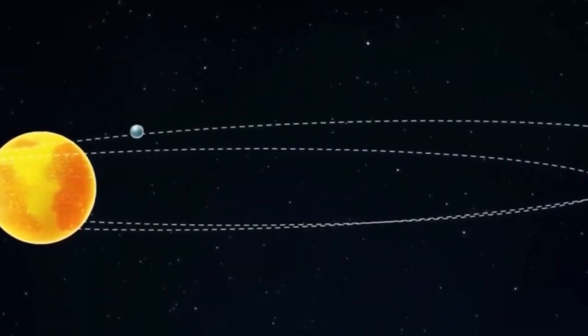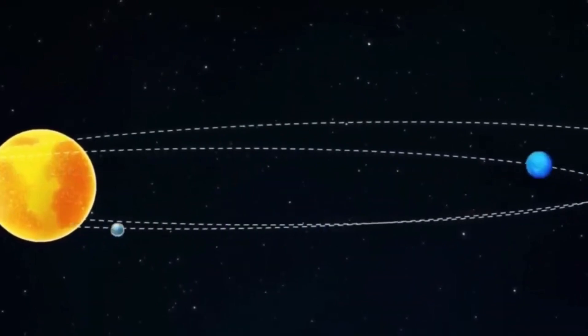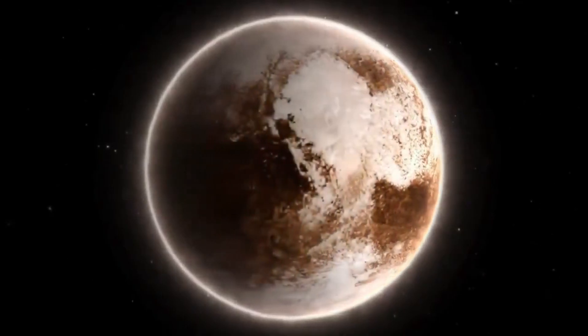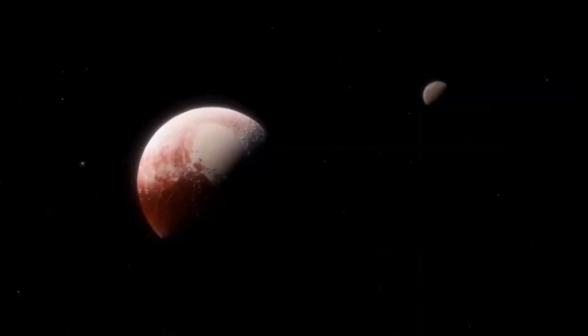Finally, on September 23, 1846, German astronomer Johann Gottfried Galley observed Neptune from the Berlin Observatory, officially identifying it as the eighth planet in our solar system.